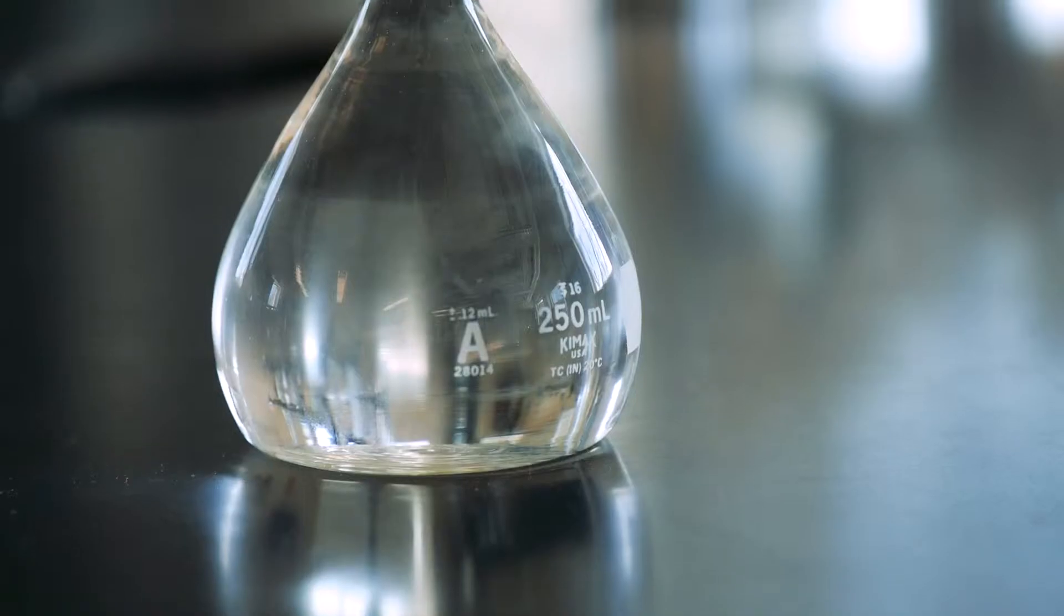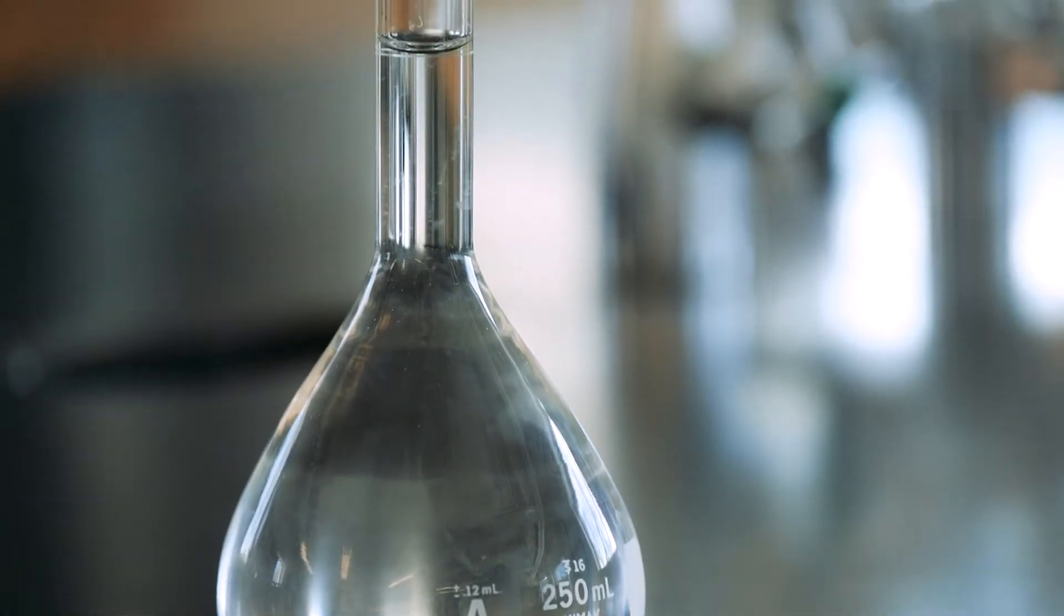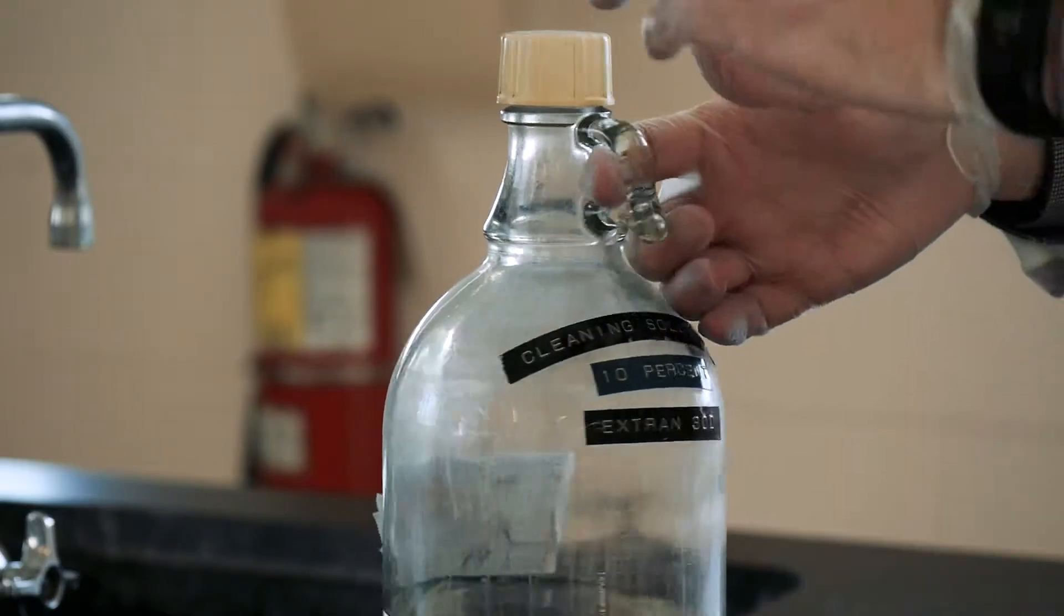A volumetric flask is a flat-bottomed bulb with an elongated neck calibrated to hold a precise volume of liquid. To clean and use volumetric flasks, first grab some X-Dram cleaning solution.